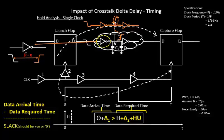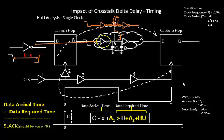So initially it was D, now it's D minus X because of the cross-stroke computation — because of the cross-stroke delta delay. Because of that, this amount of delay will get deducted from the equation theta, and as a result, your equation will become theta minus X.